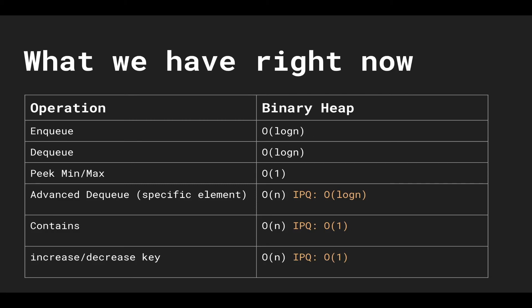These are the operations we have right now with our current existing implementation of a binary heap. We have logarithmic enqueuing and dequeuing because of swimming and sinking. We have constant access to the min or max element because of our heap invariant — it's always going to be at the top. But the methods that require knowledge of where specific elements sit in our array take a linear amount of time.